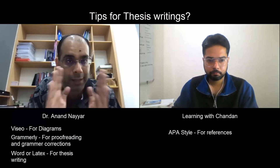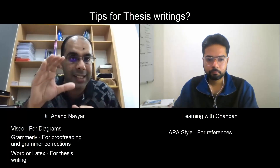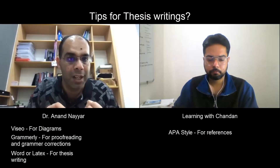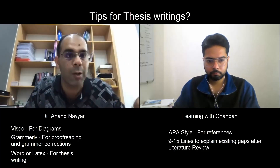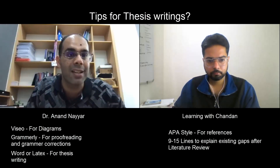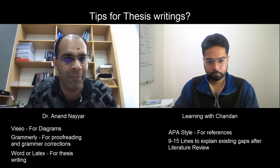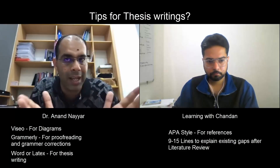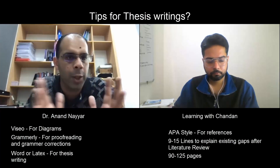Another tip I almost forgot: once you complete your literature review, give at least nine to fifteen lines clearly stating what the existing gaps are and what problems in existing works led to your motivation. This helps the examiner understand why your proposed work is novel. That is what makes the work adjusting and clearly demonstrates the novelty of your contribution.